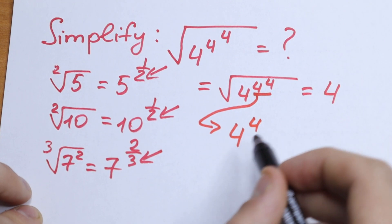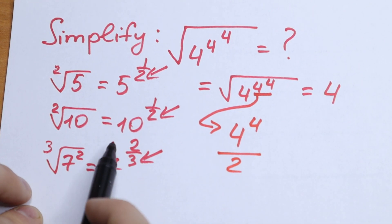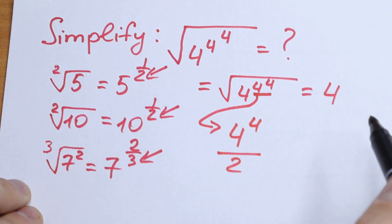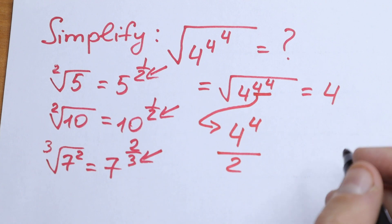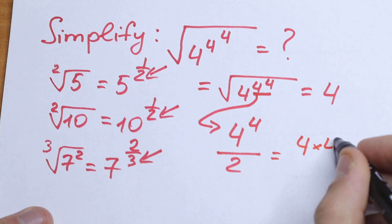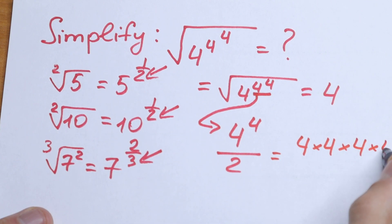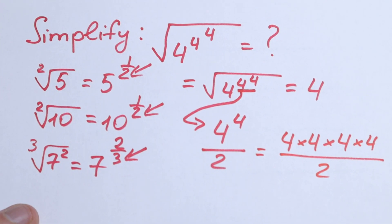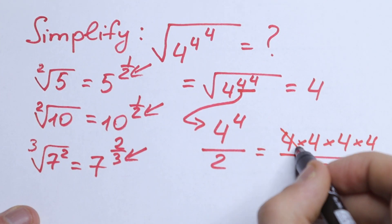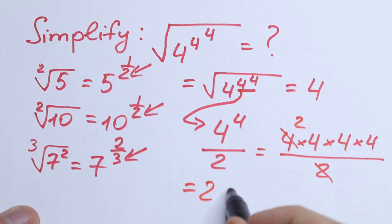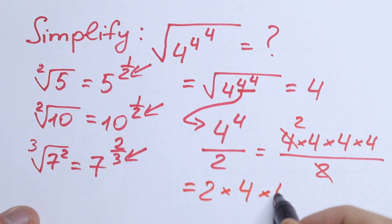We need to divide 4 to the 4th power by 2. Using this logic, 4 to the 4th power divided by 2 — how can we solve it? We know that 4 to the 4th power equals 4 times 4 times 4 times 4, divided by 2. We cancel this 2 and one 4, leaving only 2, and as a result we have 2 times 4 times 4 times 4. This is our power.